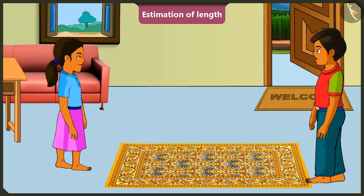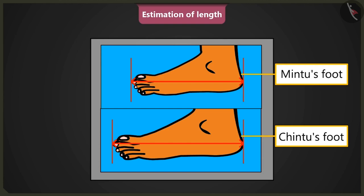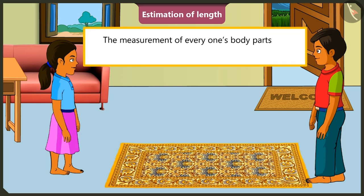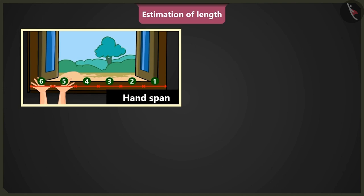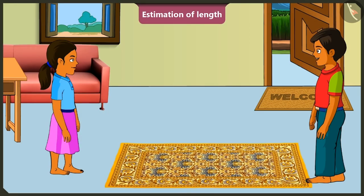Mintu, the carpet did not shrink. Look carefully. Actually, my feet are longer than yours and your feet are shorter than mine. That's how the measurement of the same carpet came out differently. Yes, Mintu, because everyone's body parts vary in size, everybody gets different measurements. Now I understand that hand span, cubit, and foot span — these units are not always the same. Yes, and always keep in mind that these units are not correct because everyone's measurements are different.